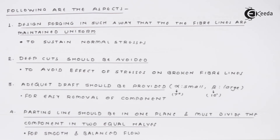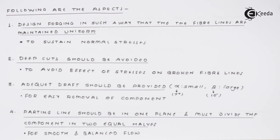The next thing is the parting line. The parting line is very important as far as the product and the forging are concerned. The parting line should be in one plane — that is the first necessity. The second necessity is that it must divide the given product into two equal halves. If this is maintained, it will give proper strength as well as proper orientation of fibers. Equal distribution of metal in both halves gives better strength for smooth and balanced flow.